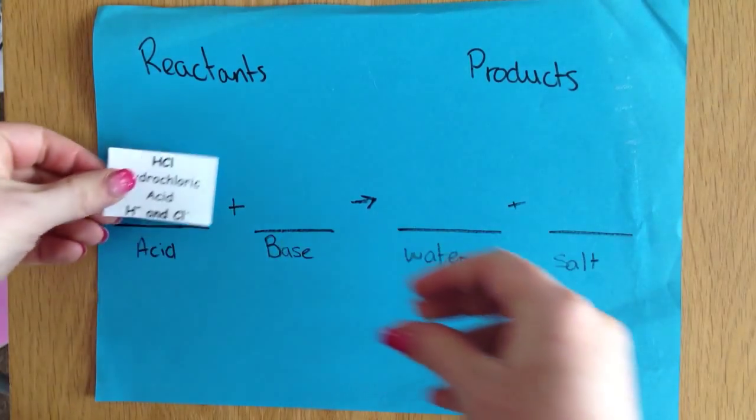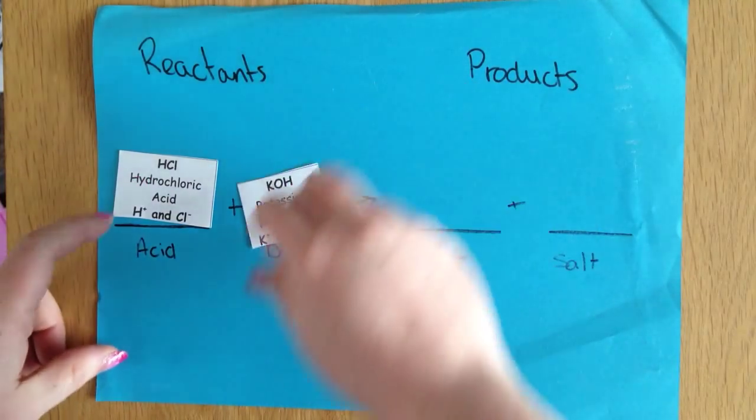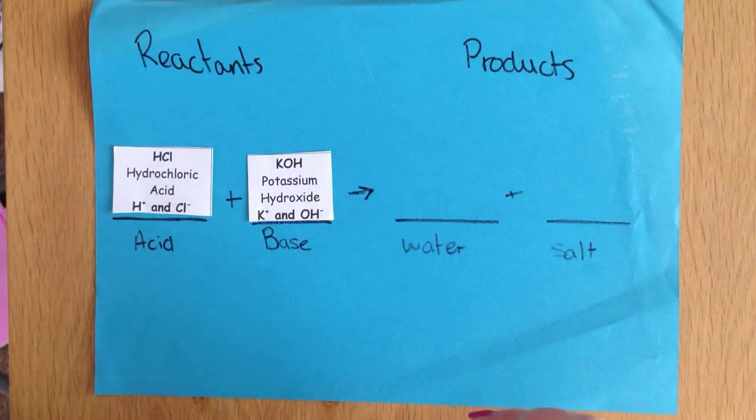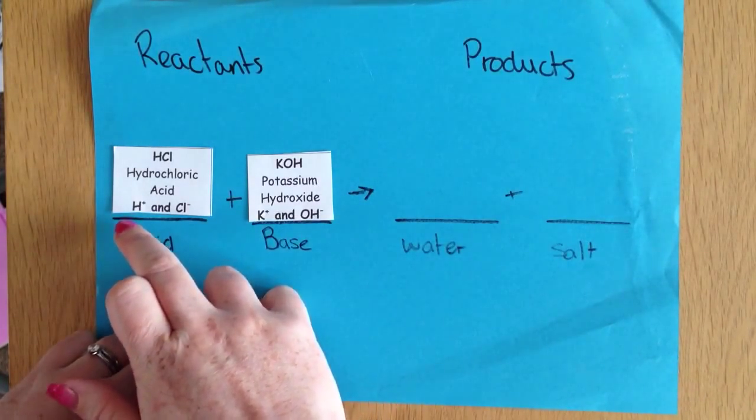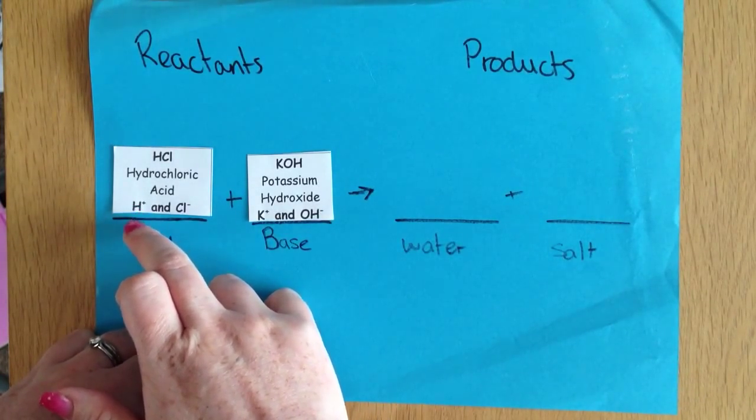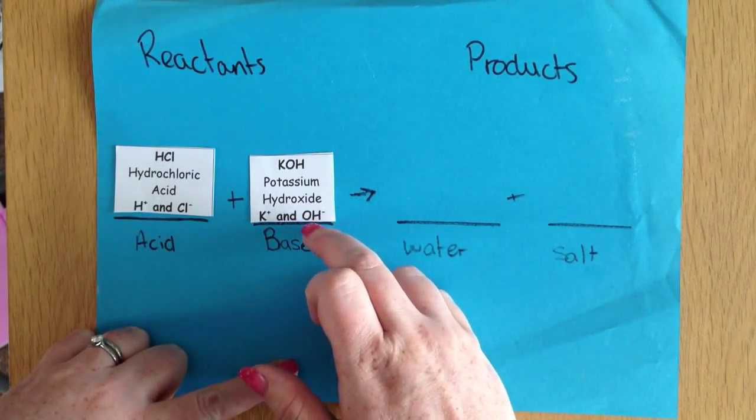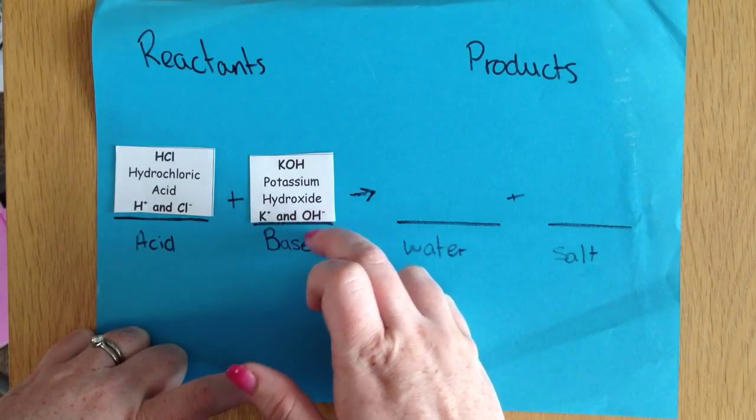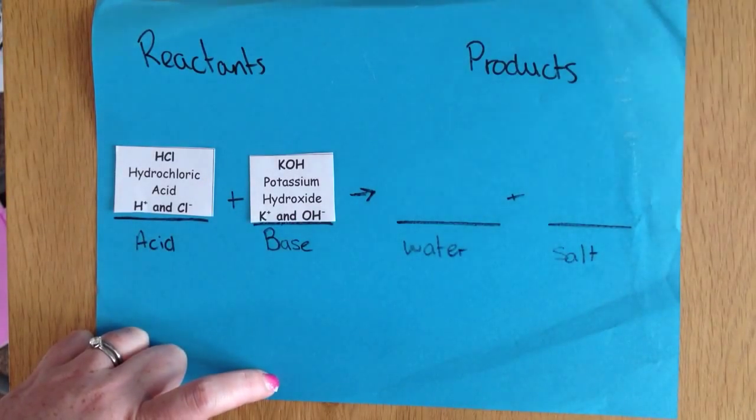Now whenever we have an acid, whenever you have anything really, you're going to want to try and break it down into the two different ions that you have. So here we have our acid, always going to have hydrogen ion in our acid and hydroxide, always going to have hydroxide ion in our base.